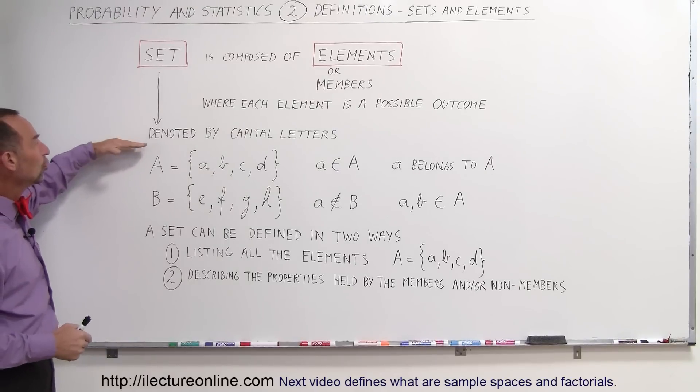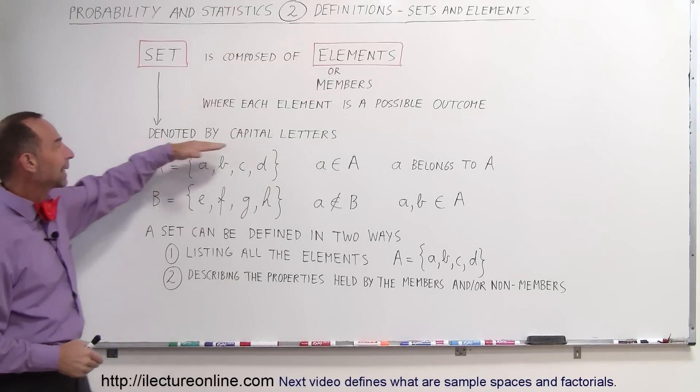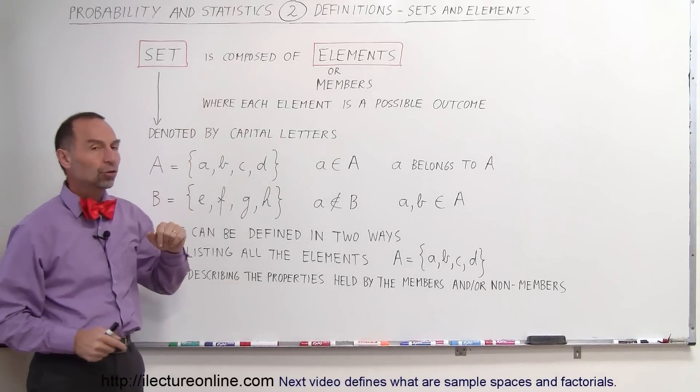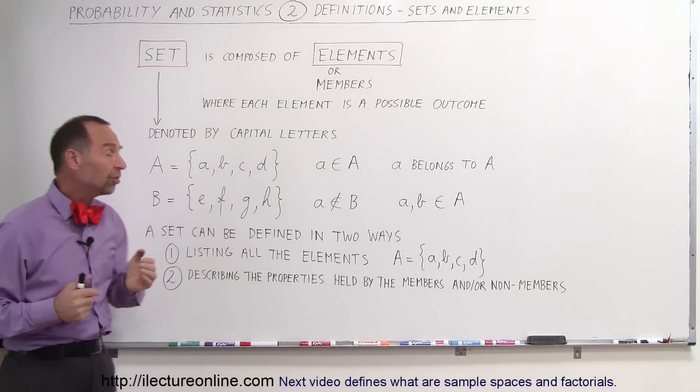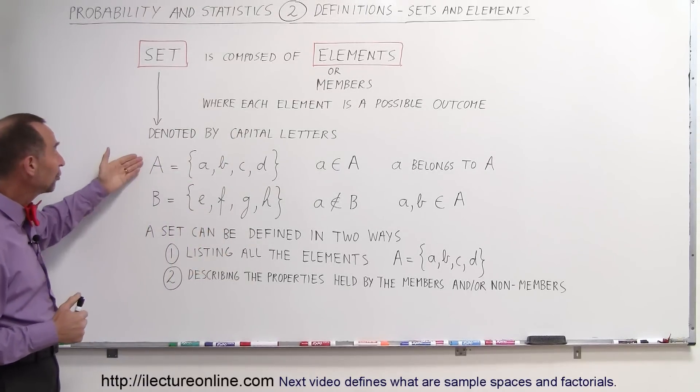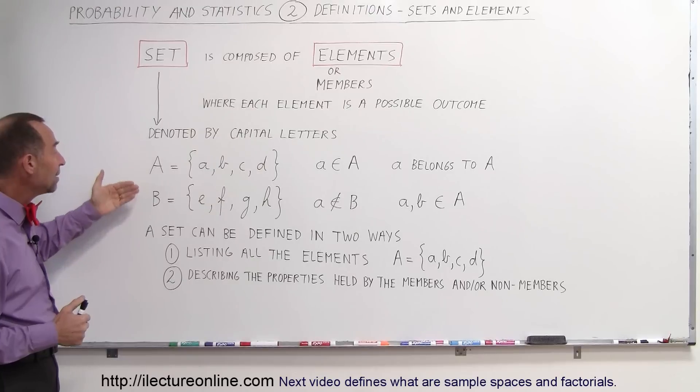A set is usually denoted by capital letters. So for simplicity, let's say that we have two sets, A and B.